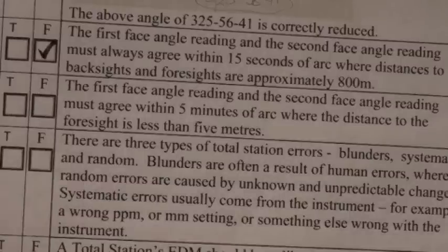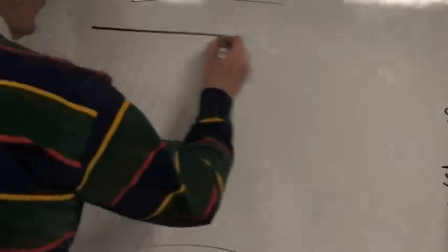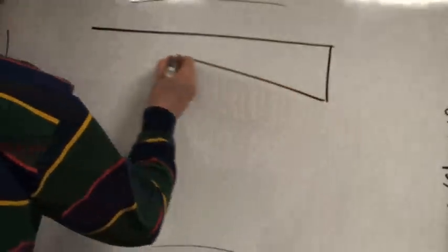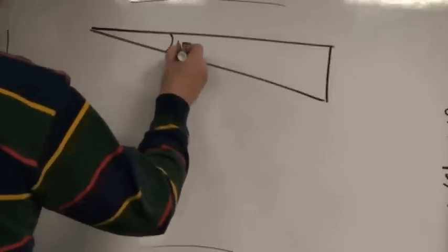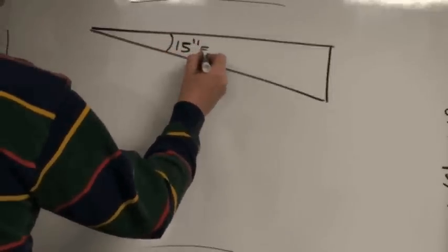Must the first and second angle on an 800-meter distance agree within 15 seconds? Let's illustrate this error by taking a triangle, and we'll illustrate the 15-second error in the angle measurement.